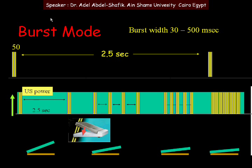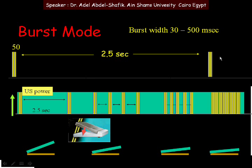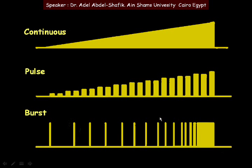In burst mode, at the early stage of pedal position three, the off period is 2.5 seconds. As you depress the pedal gradually, the off period becomes shorter and shorter. At maximum depression, the off period disappears entirely and it becomes a continuous phaco mode.